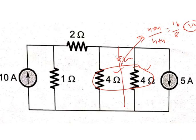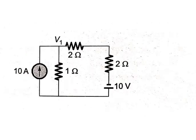Now do the source transformation. The current source is in parallel with the resistor, so we can replace it with a voltage source in series with the resistance. The resistance becomes 2 ohms and the voltage becomes V = I × R = 2 × 5 = 10 volts. So the 2 ohms in parallel with the 5 amp current source is replaced with 10 volts in series with 2 ohms.